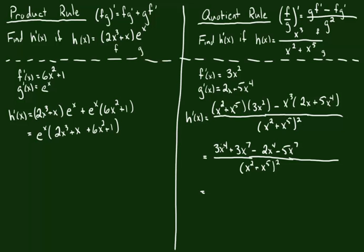Lastly, we have like terms. There's an x to the fourth and a negative 2x to the fourth, so that becomes a single x to the fourth. There's 3x to the seventh minus 5x to the seventh, so 3 minus 5 gives us negative 2x to the seventh. This is our numerator, and the denominator stays exactly as we had it before.